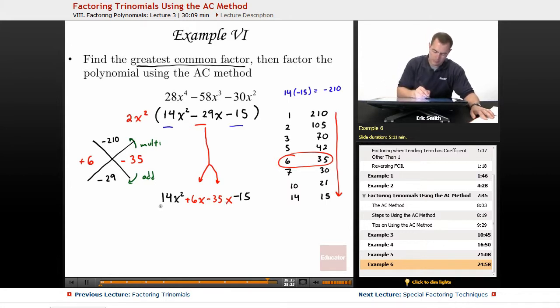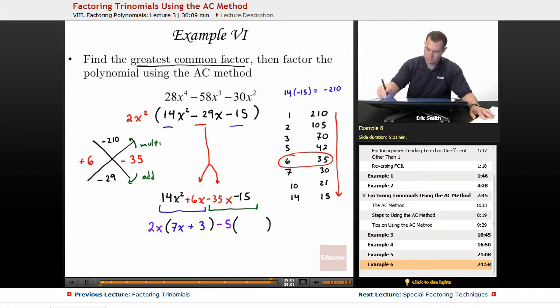Grabbing these first two and looking at what they have in common. So I see that we can take out a 2x. That would leave us with a 7x plus 3. Okay, not bad. Looking at the next two numbers, these ones we can pull out a negative 5. That would leave us with a 7x and a plus 3. Okay, looking pretty good.